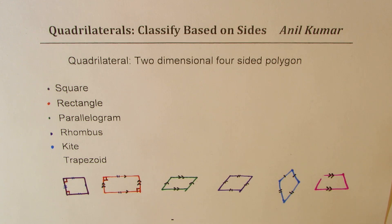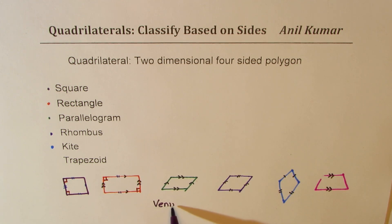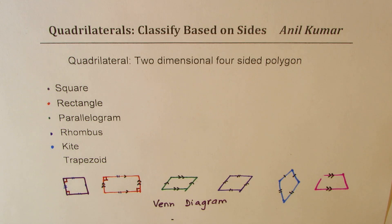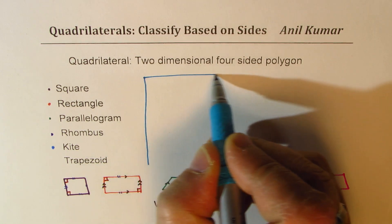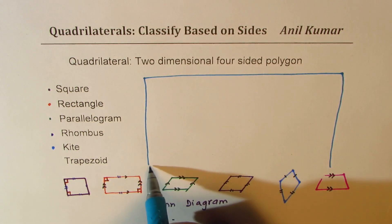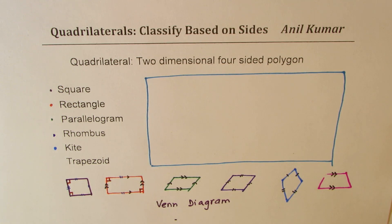So those are the different quadrilaterals we've been talking about. Now, can you make a Venn diagram to represent them all based on their sides? Think about it — as an exercise, I'd like you to make a Venn diagram. You can pause the video and try. So here we have all the quadrilaterals — this is a set of quadrilaterals.